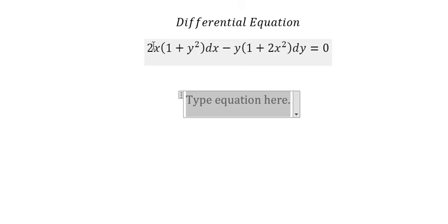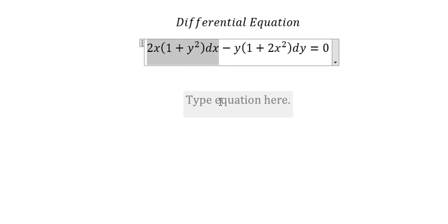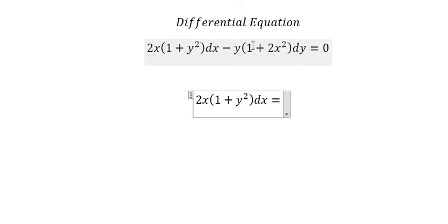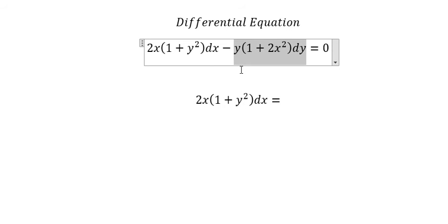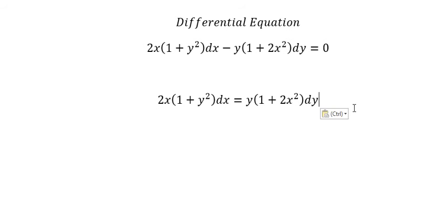First, we move terms to the right, then divide both sides by (1 + 2x²) and (1 + y²). This separates the variables.